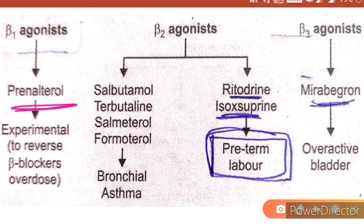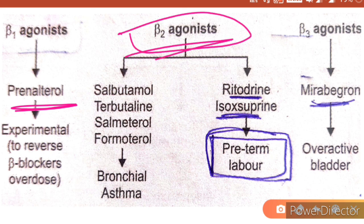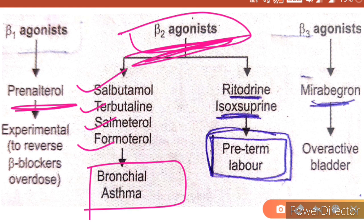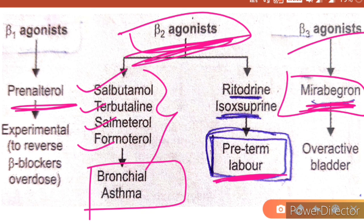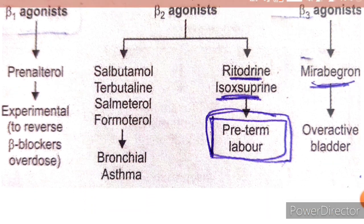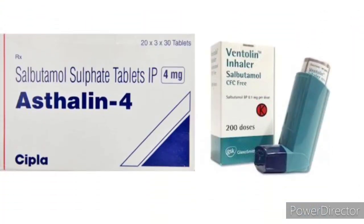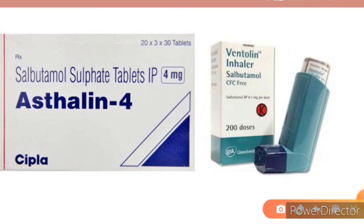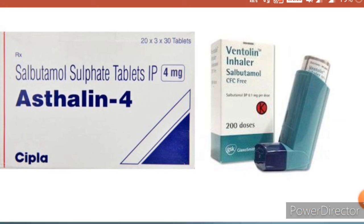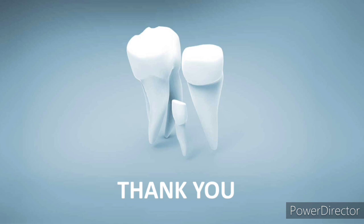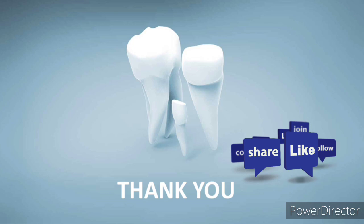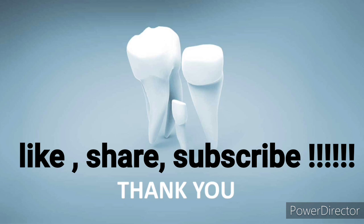Beta-1 agonist prenalterol is still experimental and not widely in use. Beta-2 agonists are very important: salbutamol, terbutaline, salmeterol, and formoterol are used for bronchial asthma. Ritodrine and isoxsuprine are used for preterm labor. Beta-3 agonist mirabegron — a peg MCQ — is used for overactive bladder. Salbutamol is available in tablet form and as an inhaler (Ventolin inhaler). Further detailed study of drugs like adrenaline, noradrenaline, and clonidine will follow in the 'one drug in three minutes' series.